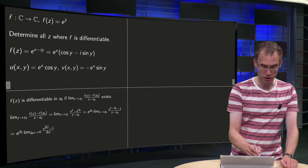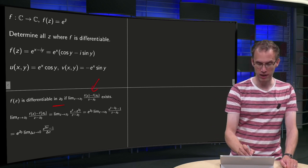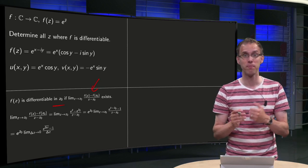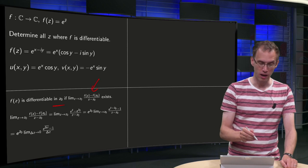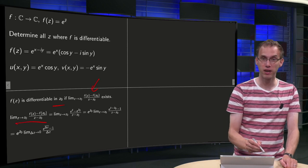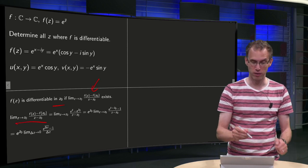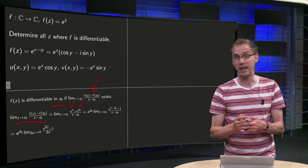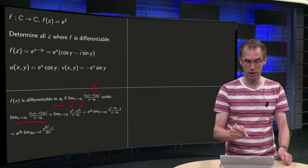f(z) is differentiable at z₀ if this limit over here exists, and let's see whether we are able to compute this limit. So what do we do? We have to compute this limit. We know f(z), so we have e^z̄ minus e^(z̄₀). We can try to take out e^(z̄₀), take it in front of the limit.